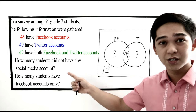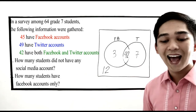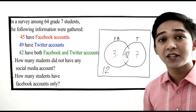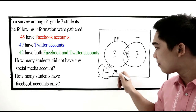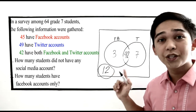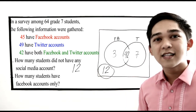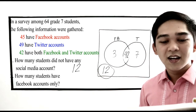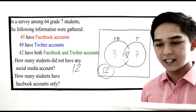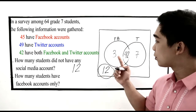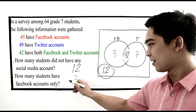Proceeding to the questions: How many students did not have any social media accounts? Clearly, that is the number outside the two circles, which is 12. Next, how many students have Facebook accounts only? That is 3.